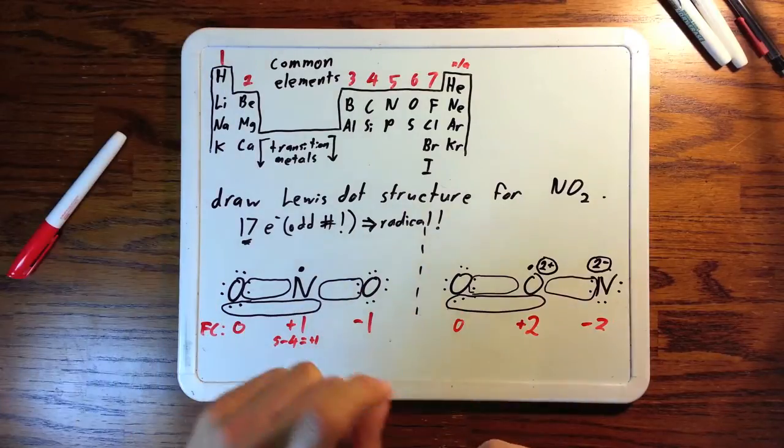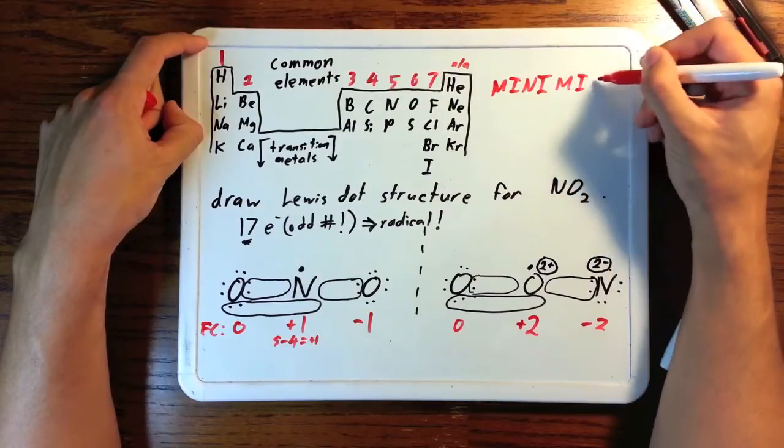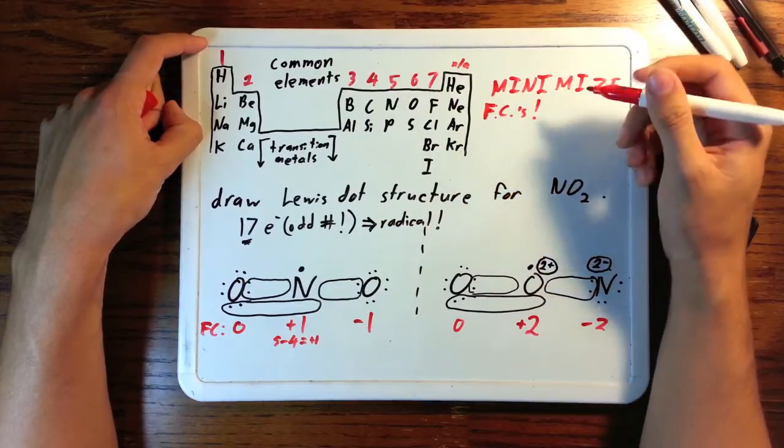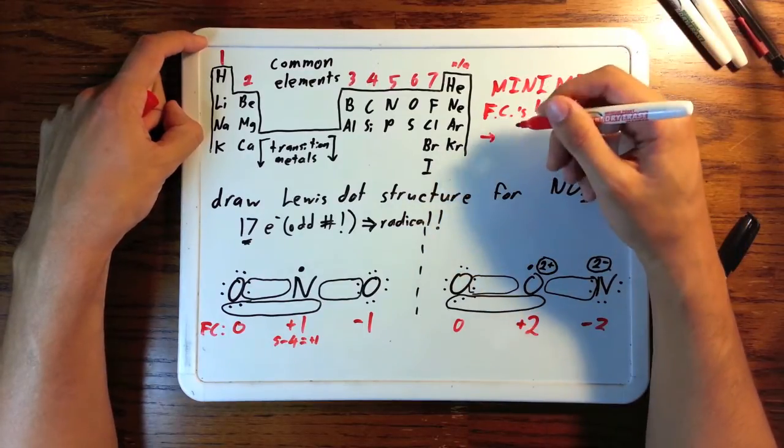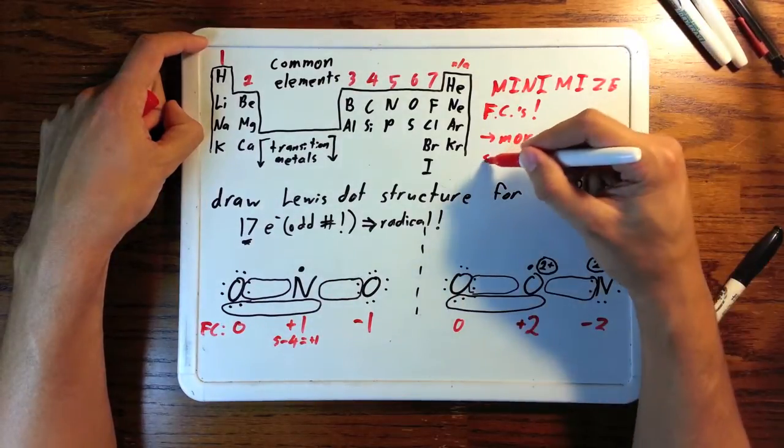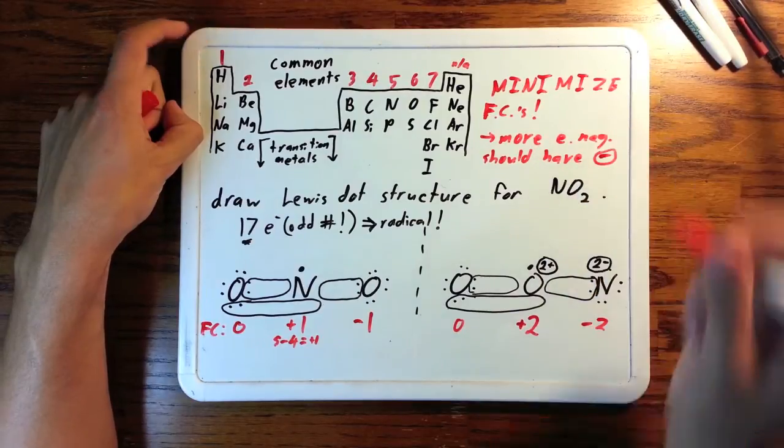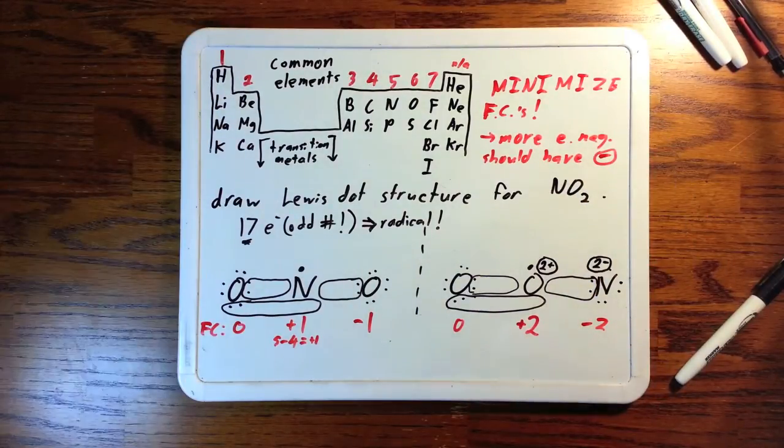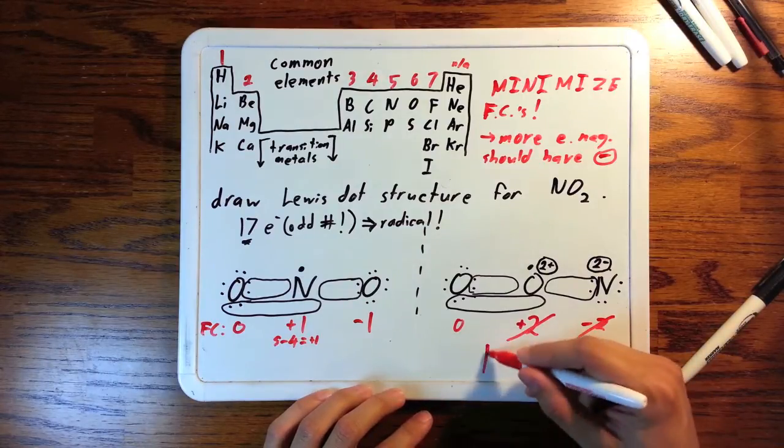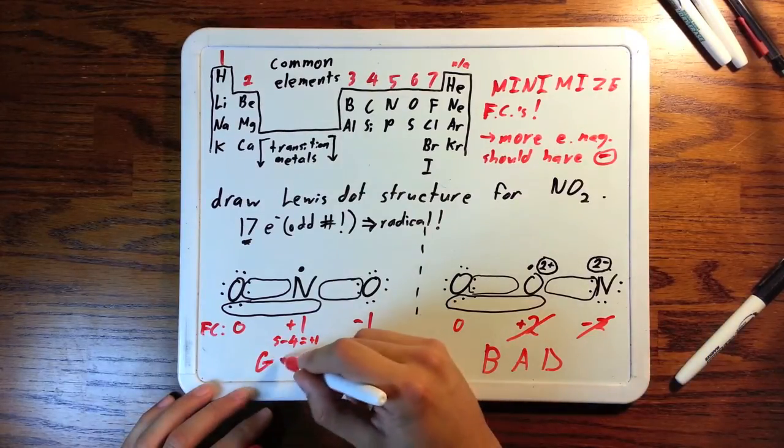Here is the point of this whole video. Once you have formal charges, what you want to try and do is select the structure that minimizes formal charges. So here, the structure with plus 1 minus 1 is better than the structure with plus 2 minus 2. Also, the more electronegative atom should have the negative charge on it. As oxygen is more electronegative than nitrogen, because it's to the right in the same period, the oxygen should have the negative charge and not nitrogen. So we have two reasons why the structure on the right is bad, and the structure on the left is much better.